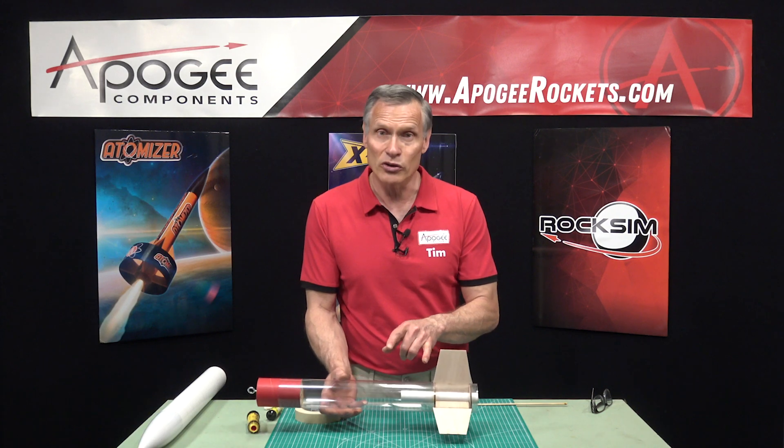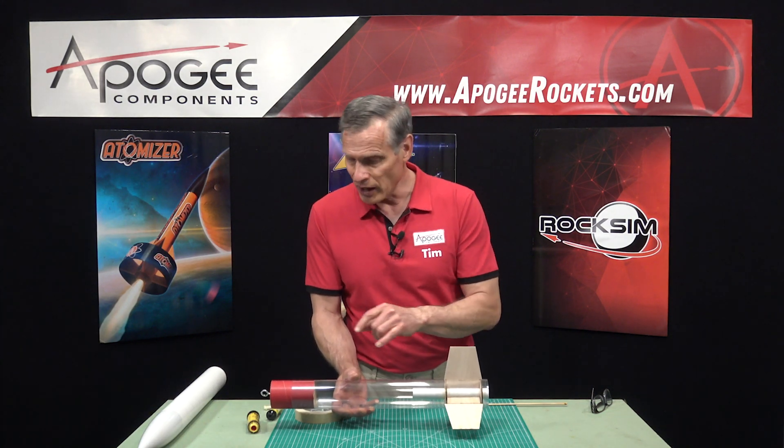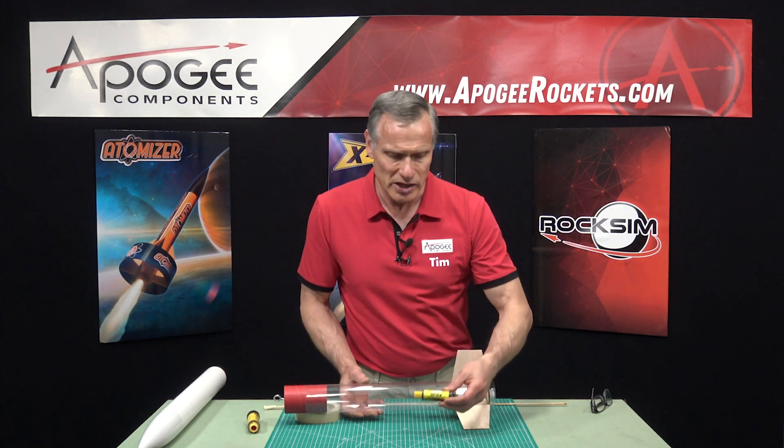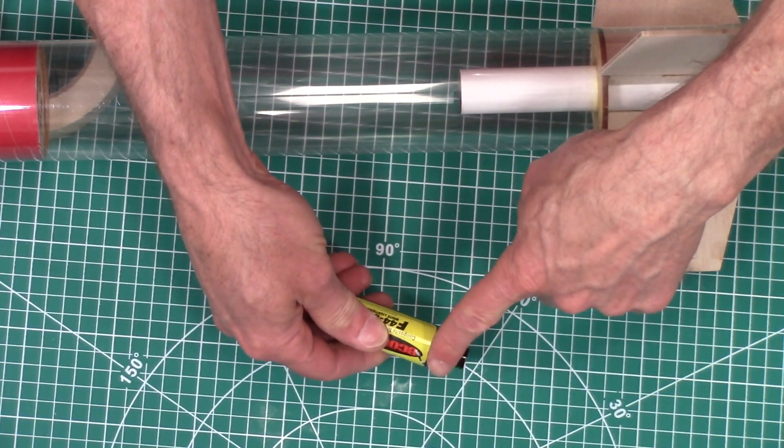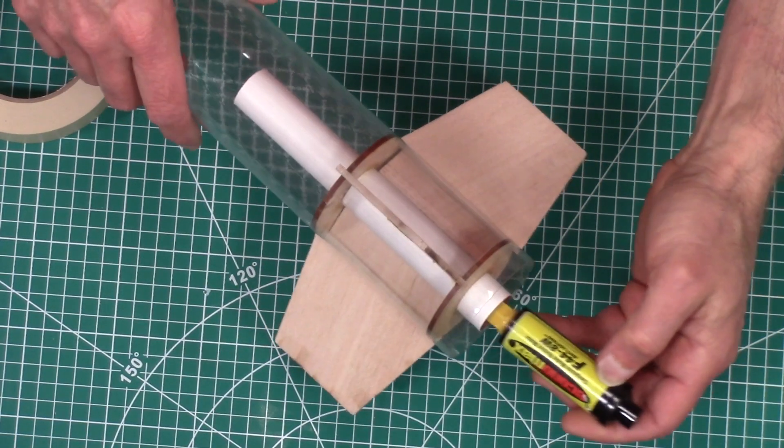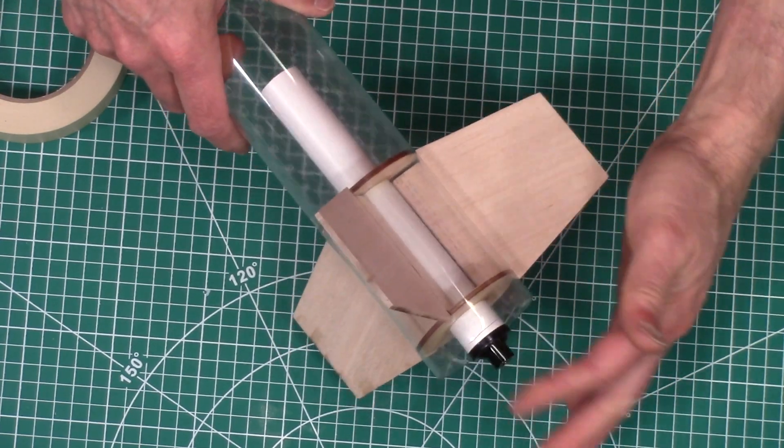Again you won't use the engine block because the engine block for the rocket engine is built in to the motor and that's what stops it from going all the way in.